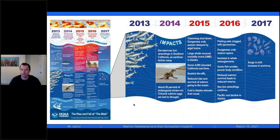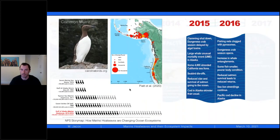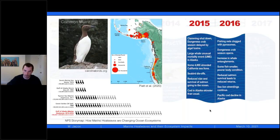Moving into 2015 and 2016, this was really the heart of this event. One major impact was die-offs of some charismatic animals, including seabirds and marine mammals like sea lions. For the common murre, an estimated up to a million birds died in this event. This comes back to changes in food availability — there simply was not enough food, and all up and down the coast there were birds found dead. In terms of mortality, it exceeded the Exxon Valdez oil spill.